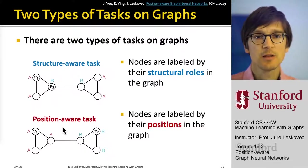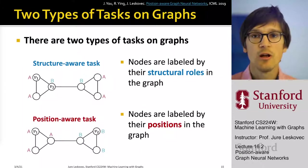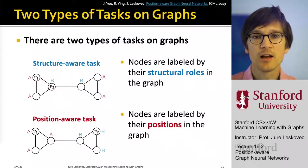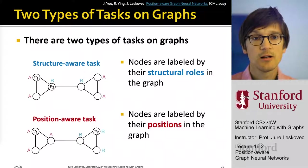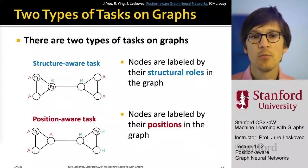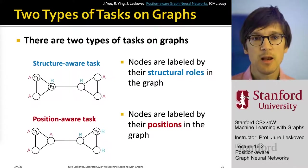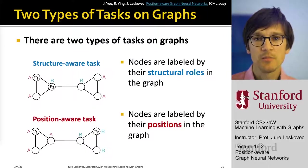A different type of task is what we call a position-aware task. For example, community detection is a position-aware task. Nodes on one side have one label and nodes on the other side have the other label, even though their local structures are comparable or isomorphic. Node one and node two basically have the same neighborhood structures around them.